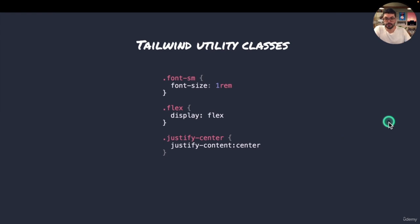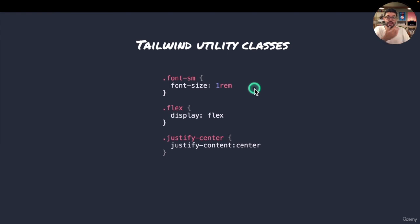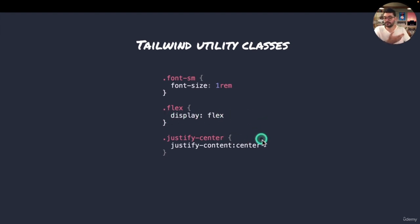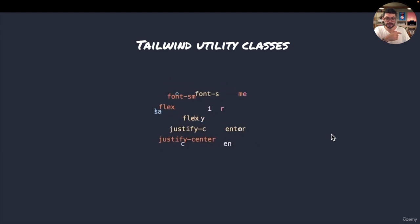So Tailwind has just created a lot of predefined classes for you. For example, font-sm is going to be a small font, there is also font-md for medium and font-lg for large — these are predefined classes. Tailwind has created a lot of classes like that. For example, flex does display flex, and justify-center does justify-content center. There are a lot of utilities, and it's exactly like the code that you would have written yourself.